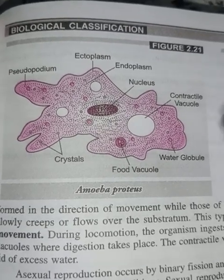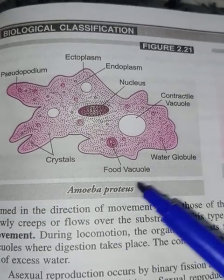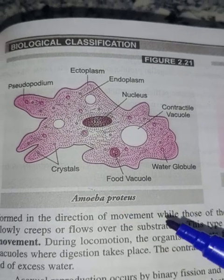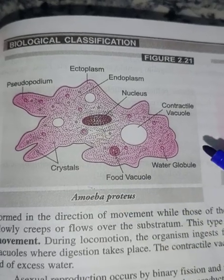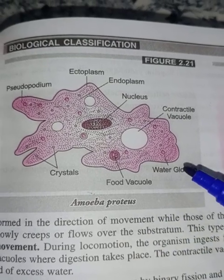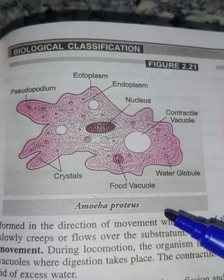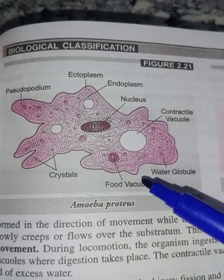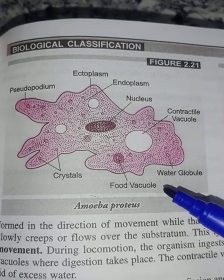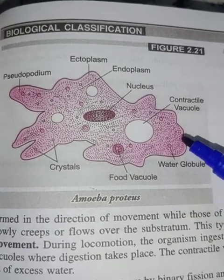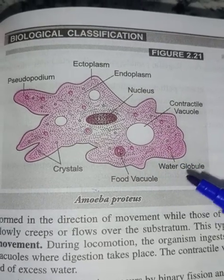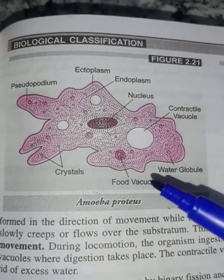In this video I am discussing about the Amoeba. The Amoeba is the best example for the protozoan. All protozoans belong to the kingdom Protista. It is the best example for the unicellular eukaryotic organism, as all protozoans are unicellular and eukaryotic.